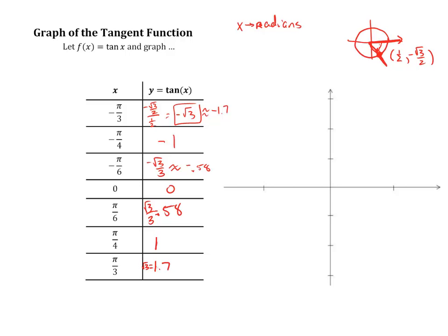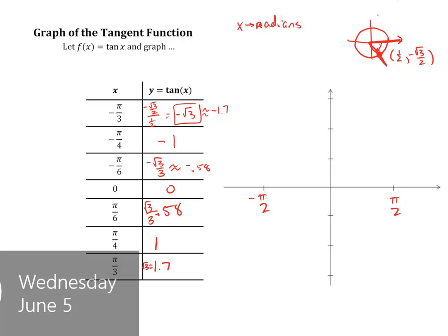Now what I'm going to do is I'm going to graph from negative π over 2. You may wonder, why did I start at negative π over 2 and positive π over 2? Well, it goes back to the domain of the function tangent, which we learned about in the definition of the tangent function.